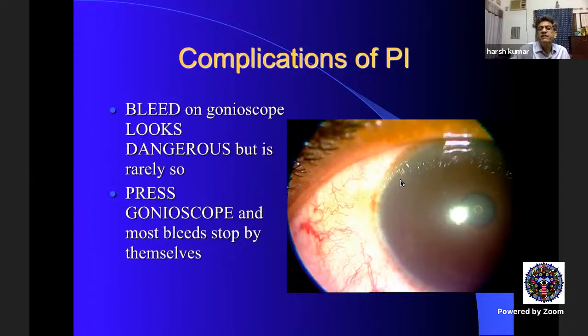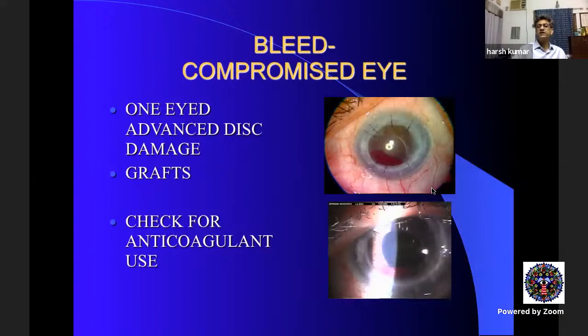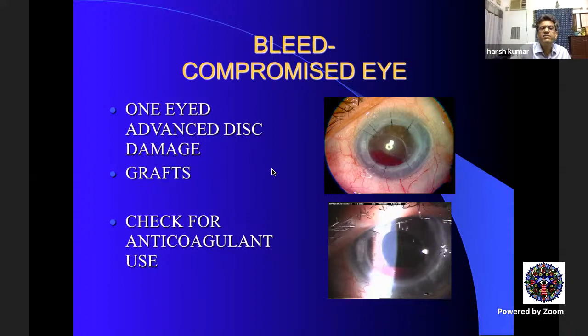The commonest complication is bleeding, which occurs in most iridotomies. It appears larger through the lens than it actually is. You can press the gonioscope to stop the bleed. Sometimes it can be very large — that is why we emphasize checking for anticoagulants. In a one-eyed patient or with a compromised disc, a large bleed is especially serious. Always check anticoagulants and avoid blood vessels at the iridotomy site.